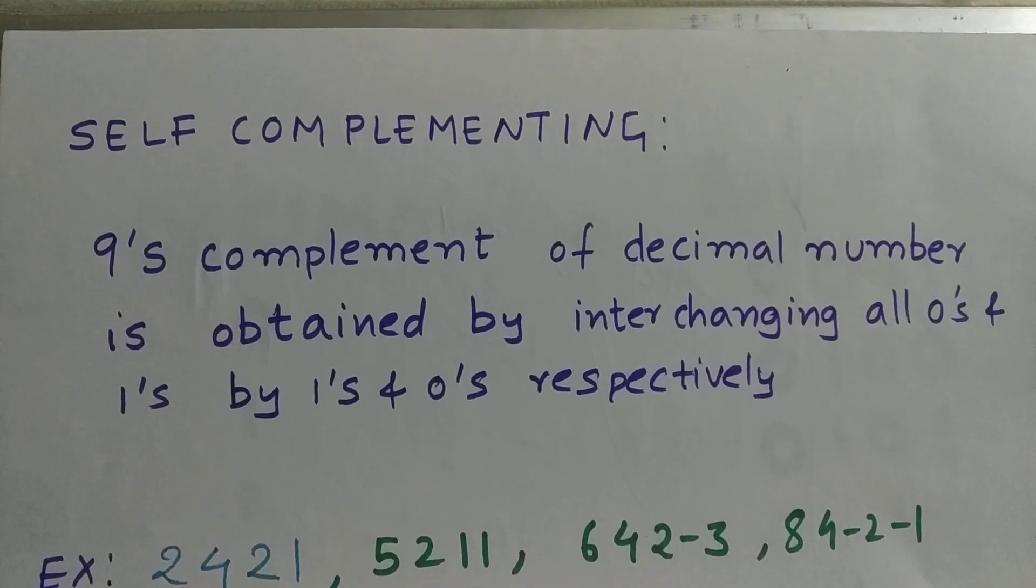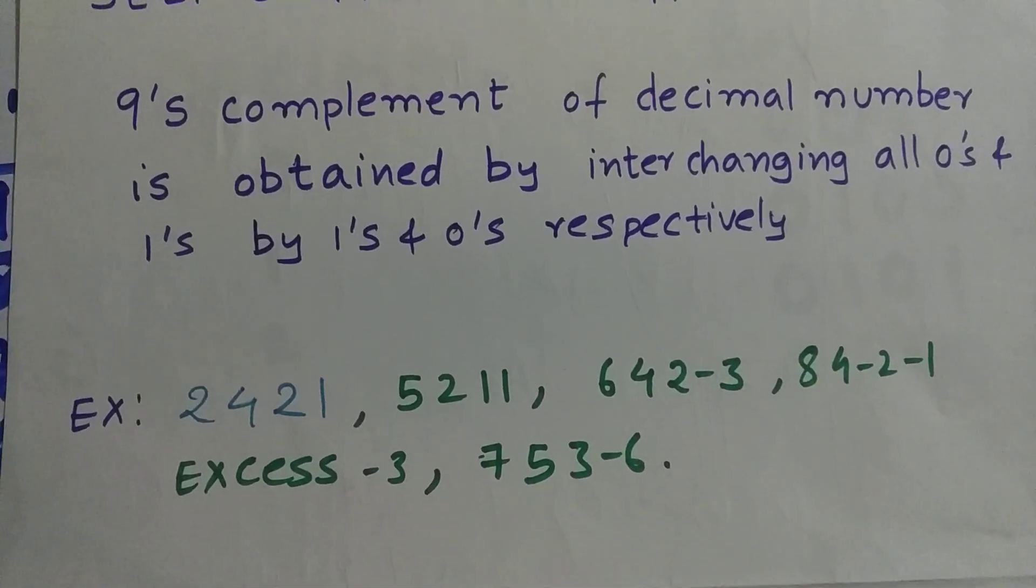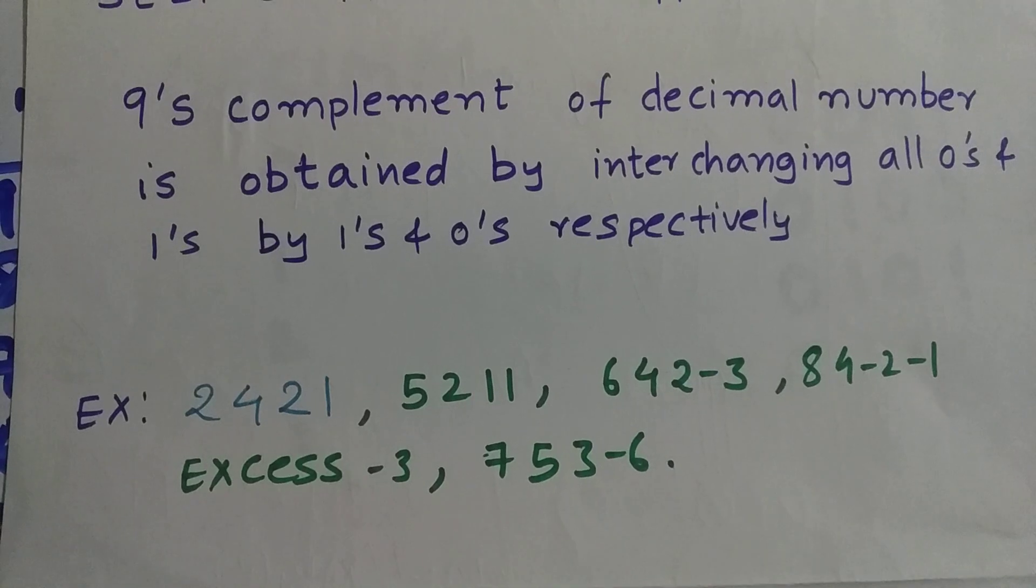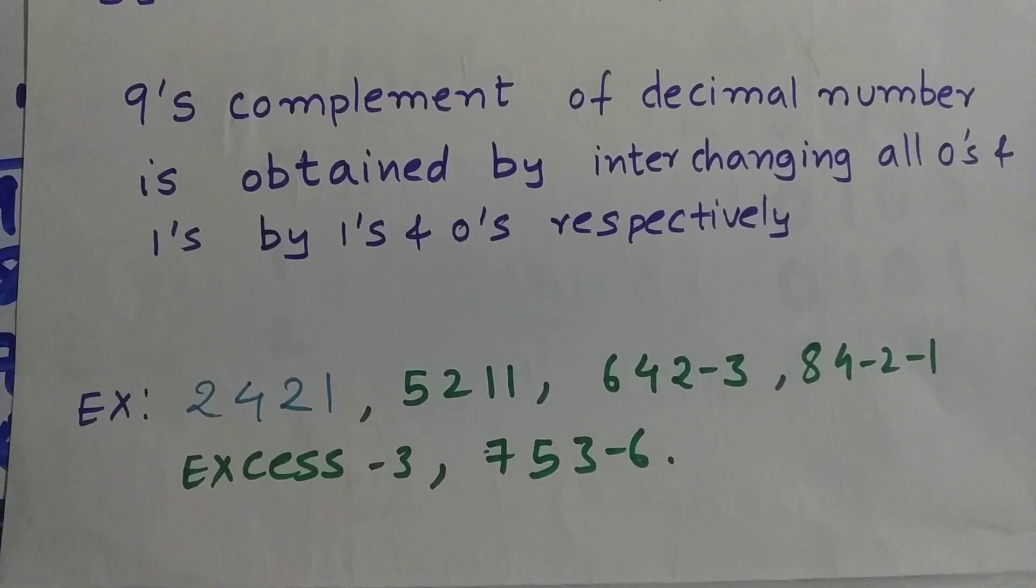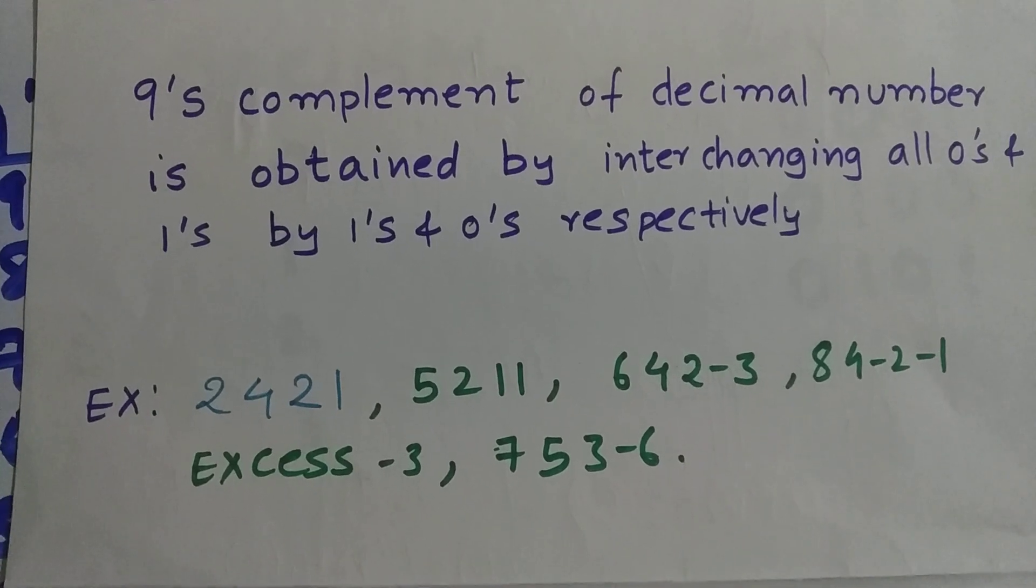I'm going to explain with an example. These are some self-complementing codes: 2-4-2-1, 5-2-1-1, 6-4-2-minus-3, 8-4-minus-2-minus-1, Excess-3, and 7-5-3-minus-6.